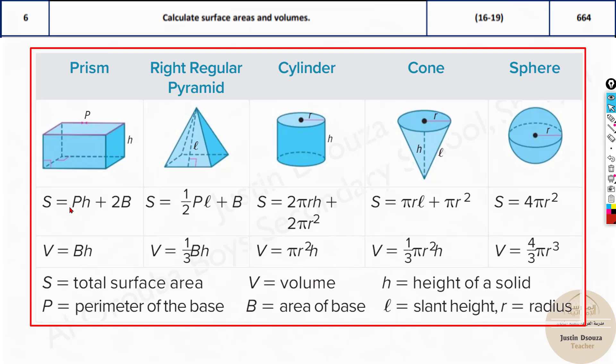H is the height. P is the perimeter of the base. If this is a rectangular prism, that's the perimeter of the rectangular base. For a right regular pyramid, it's the perimeter of the square base. L is the slant height, not the vertical height. H is the vertical height, L is the slant height. R is the radius, and H is the vertical height.